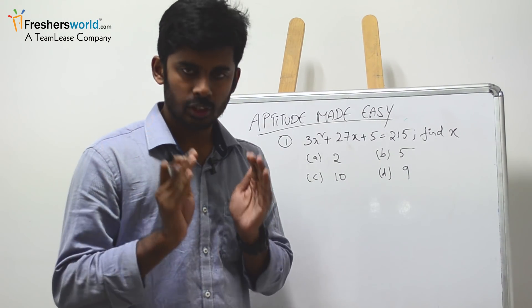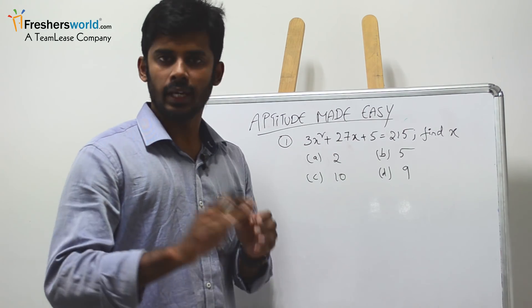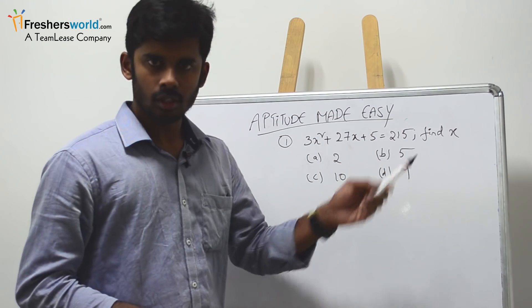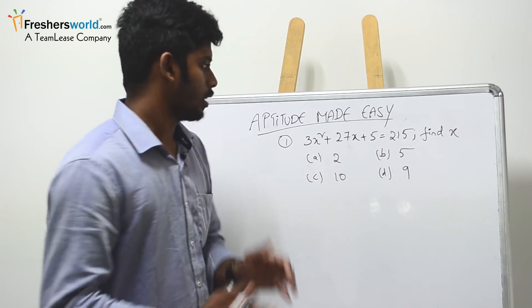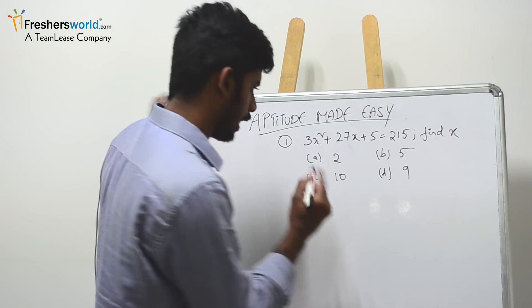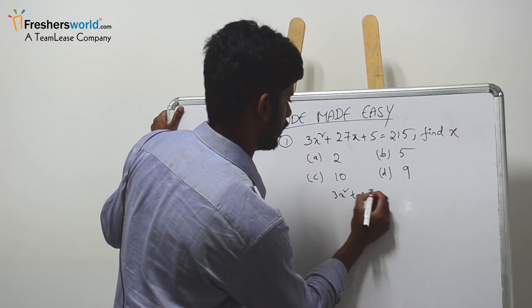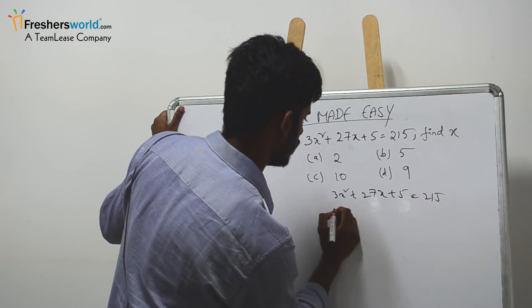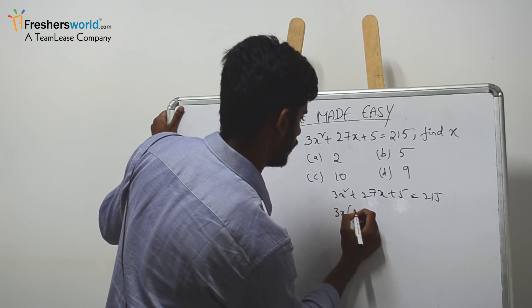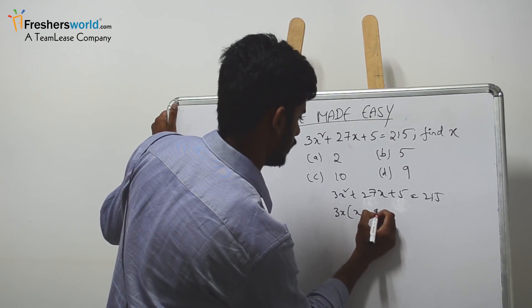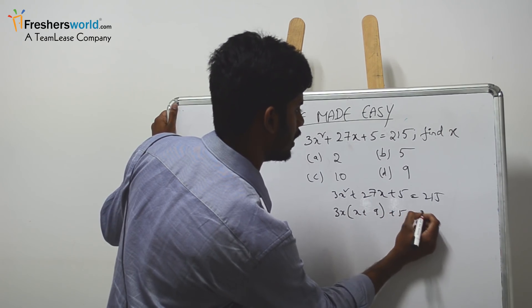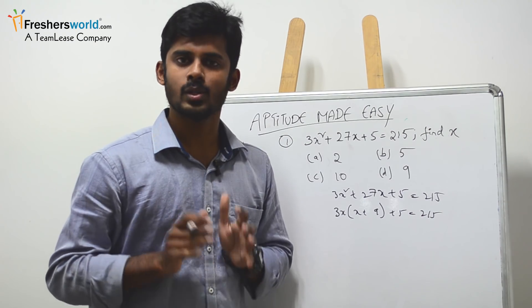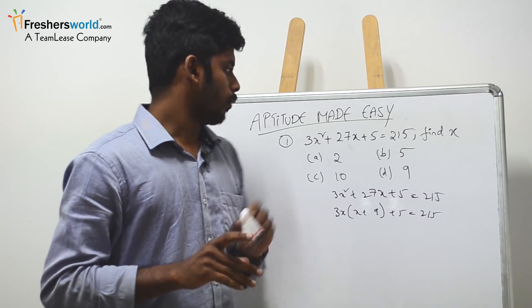Let's start with this kind of question. Whether it could be a competitive exam or any technical round, if you get this kind of question, don't try to solve it the traditional way. Some people will try to solve 3x² + 27x + 5 = 215 by taking 3x as common and writing x + 9, but this is time-consuming. There's also an elimination trick.